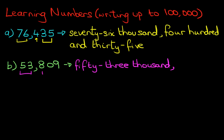The next bit is 800. And the last bit is the tens and the units. Well, there are no tens and it's just nine. How did we say it? We said eight hundred and nine. So that's what we write down. We write down eight hundred and nine. 53,809.